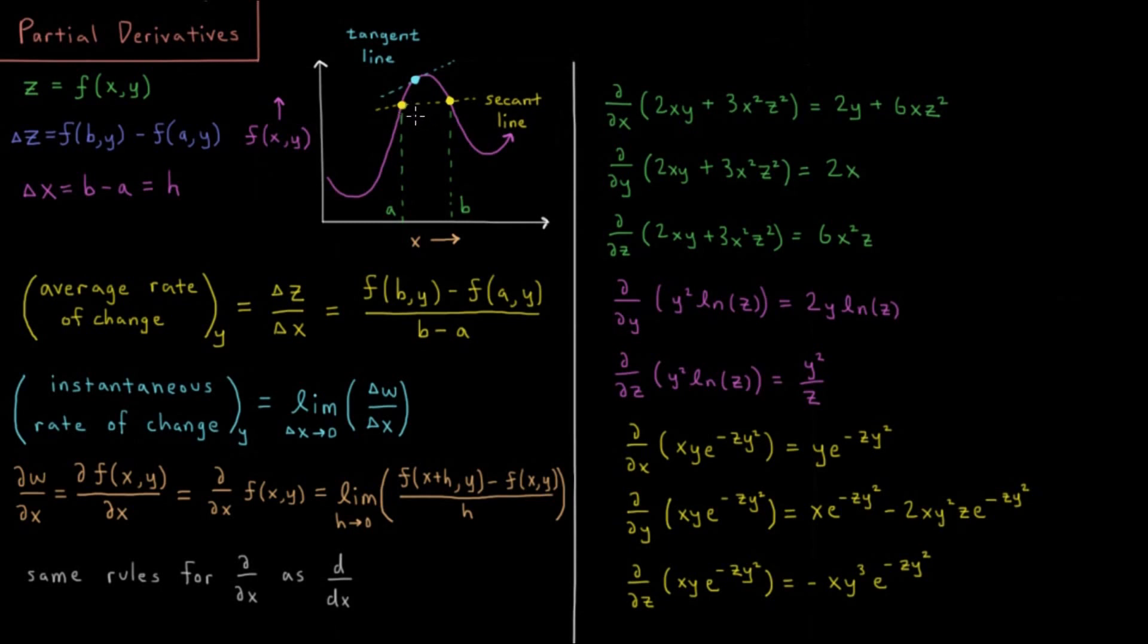But what if we're interested in the instantaneous rate of change, the rate of change at a single point just in its immediate local region? That instantaneous rate of change, which we also indicate holding y constant, would be the limit as delta x goes to zero of delta w over delta x—sorry, I changed notation from z to w there.